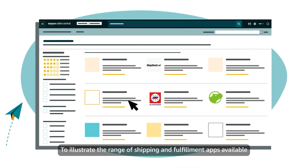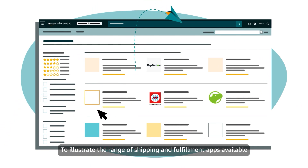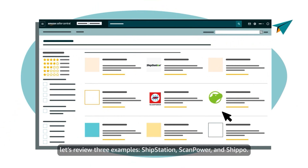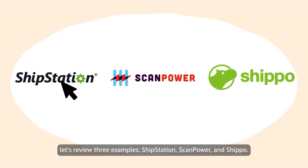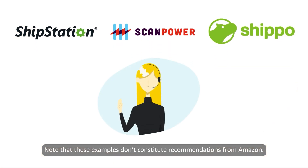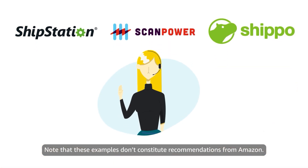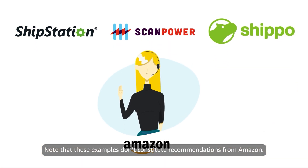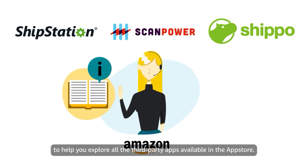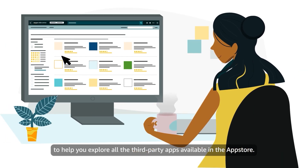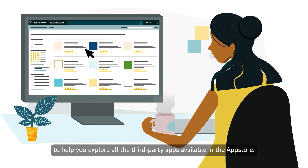To illustrate the range of shipping and fulfillment apps available in the Selling Partner App Store, let's review three examples: ShipStation, ScanPower, and Shippo. Note that these examples don't constitute recommendations from Amazon. They're offered here as information to help you explore all the third-party apps available in the App Store.